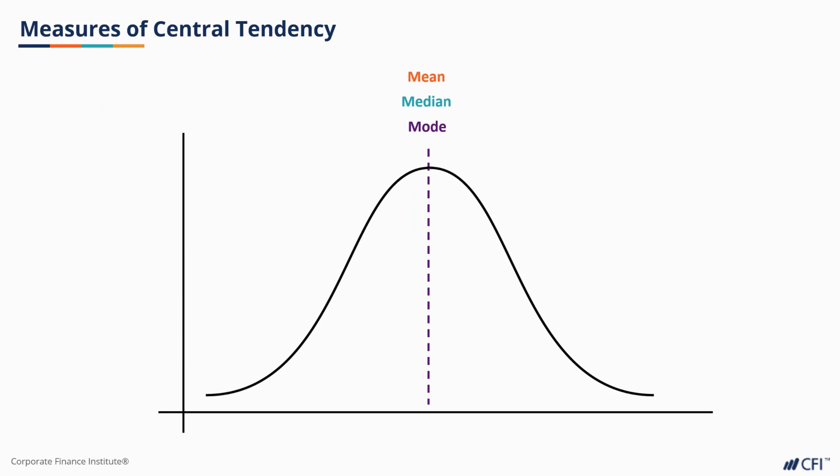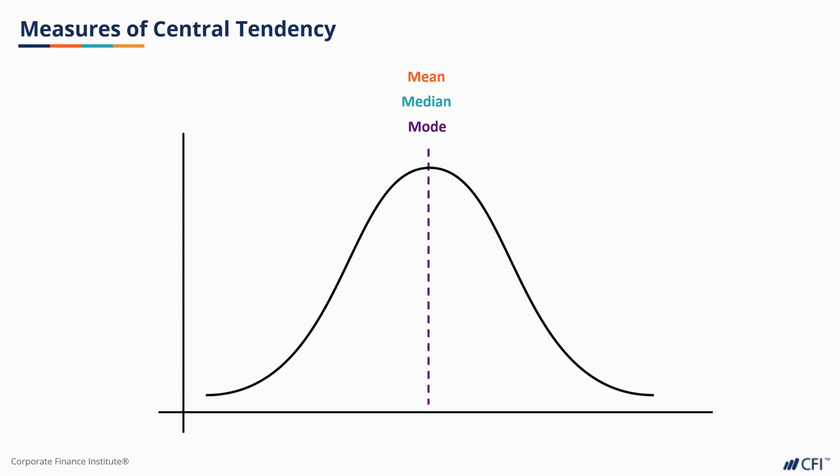Under a normal distribution, the mean, median, and mode should all fall in the middle, but in most other scenarios these measures are not interchangeable. Each tells us something different about our data, and we may prefer one depending on what it is we are trying to understand.